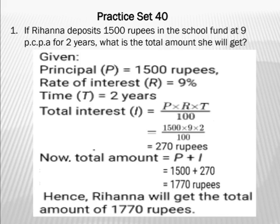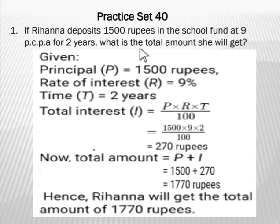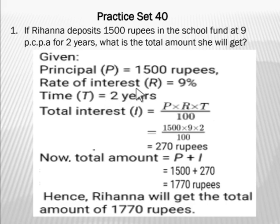Rihanna deposits 1500 rupees in the school fund at 9% per annum for two years. What is the total amount she will get? As we are solving these examples using the formula, we will first find what is given. Rihanna deposits 1500 rupees, so 1500 rupees is the principal — we will write it as P. In the school fund at 9% per annum, so the rate of interest is 9% per annum.